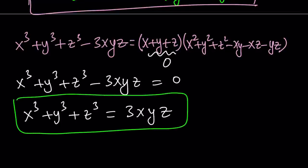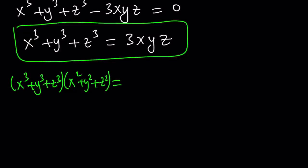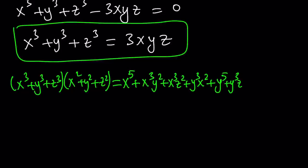Now we have the cubes and the squares. Let's go ahead and put these together by multiplying them. When we multiply x cubed plus y cubed plus z cubed by x squared plus y squared plus z squared, you're going to get nine terms. Some of these terms are going to give you the fifth powers, but you'll also get some extra terms. Using the distributive property: x cubed times x squared is x to the fifth, then x cubed y squared, x cubed z squared, y cubed x squared, y to the fifth, y cubed z squared.